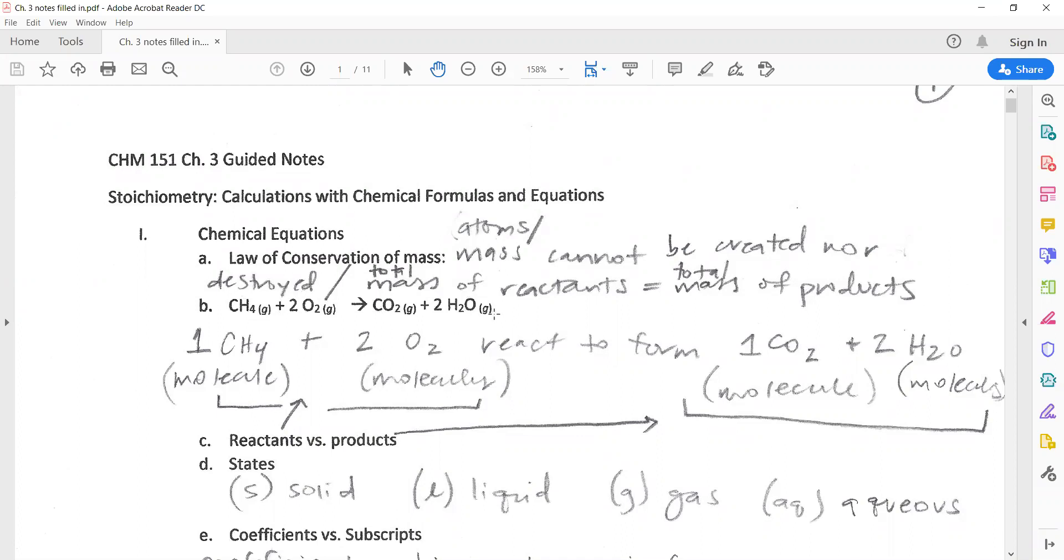Here's an example of an equation, and we can read this as CH4 reacts with O2 to form CO2 and water. You see these big numbers, called coefficients, that are showing up in front of certain substances. Some of them don't have one, that means it's an invisible one. These coefficients are telling us the ratio in which these react. So one CH4 molecule reacts with two O2 molecules to form one CO2 and two waters.